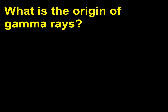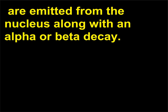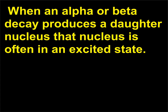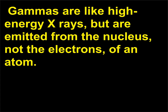What is the origin of gamma rays? Gamma rays — high-energy photons, or short-wavelength electromagnetic waves — are emitted from the nucleus along with an alpha or beta decay. When an alpha or beta decay produces a daughter nucleus, that nucleus is often in an excited state. One or more gammas are emitted as the nucleus settles down to its lowest energy, or ground state. Gammas are like high-energy x-rays, but are emitted from the nucleus, not the electrons, of an atom.